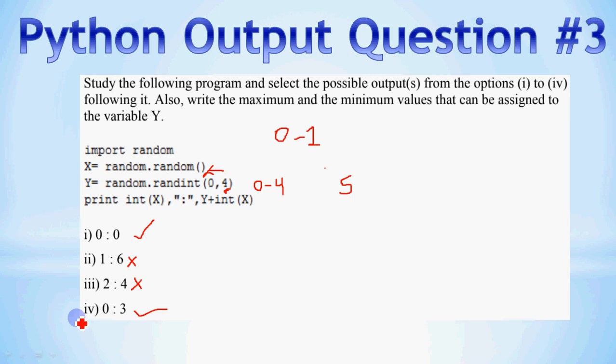To summarize: the maximum value of y is 4 and the minimum is 0. This is how you solve random number output questions. In exams, a program is given with four options and you are asked which options are valid and which are not. That's how the random function works in Python.